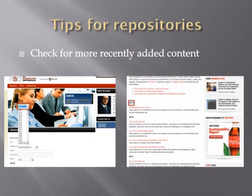Websites that act as repositories often make it easy for you by organizing their content by year, or even letting you search for it by year. If it doesn't do those things, you should still be able to find a publication date on each individual piece of content. And if you can't, you probably can't rely on its timeliness at all.